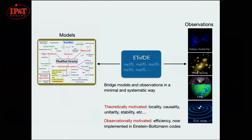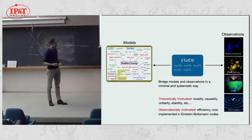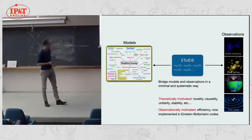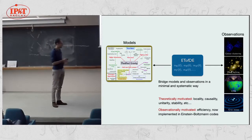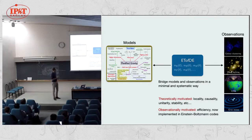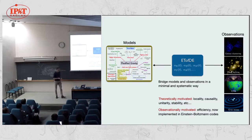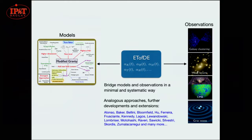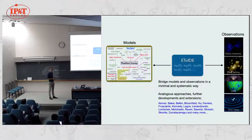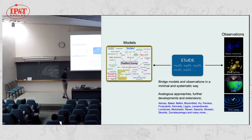The effective theory of dark energy has some theoretical motivation in the sense that the parameters one introduces are always consistent with physical principles like locality, causality, and one can impose stability conditions in a controlled way. Moreover, it has reached a certain efficiency because it has been implemented in several Einstein-Boltzmann codes, making it practical. There have been analogous approaches in the literature and further developments, with many people contributing to this.